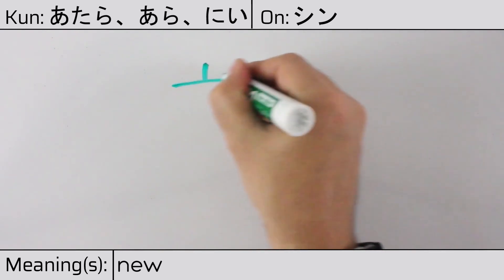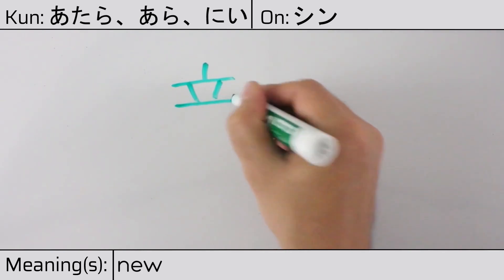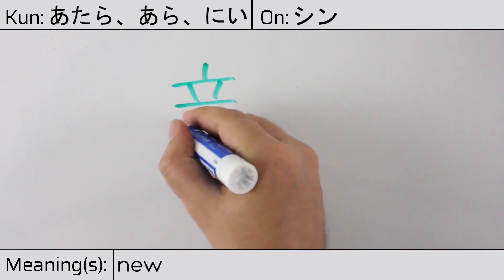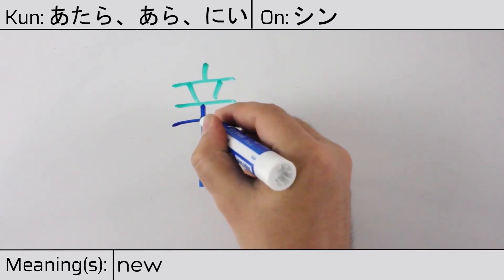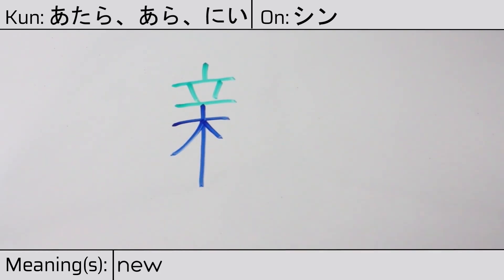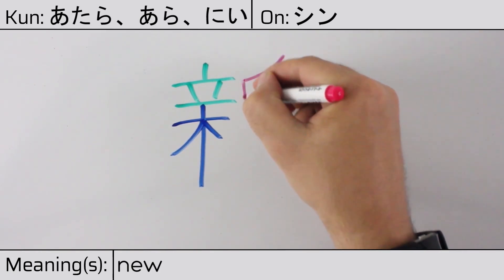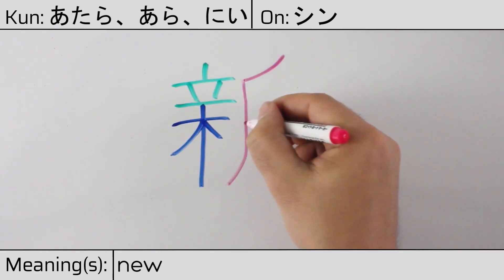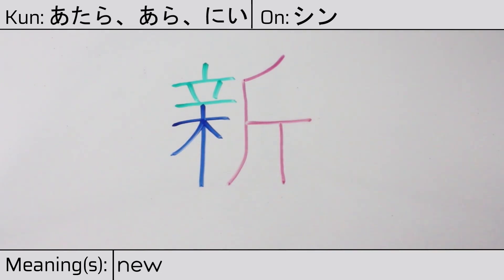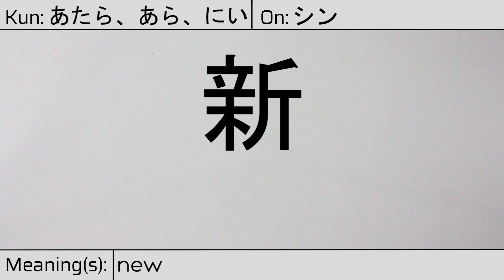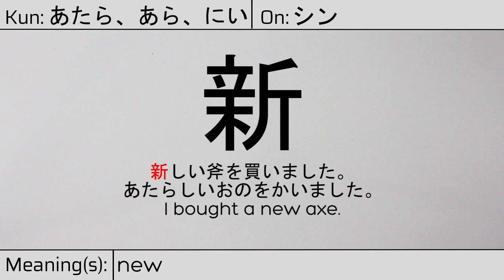This character is made up of the following radicals or parts: kanji tatsu meaning to stand, followed by ki or tree, and then the X radical ono on the right. You can remember this kanji by the following hint: a part of the forest cut down with an X, to make room for new growth. Our example sentence is: Atarashii ono wo kaimashita — I bought a new X (axe).